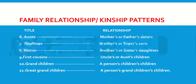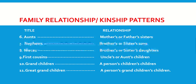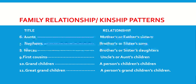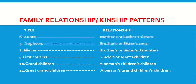Aunts are your mother's or father's sisters. Nephews are your brothers' or sisters' sons. Nieces are your brothers' or sisters' daughters. First cousins are your uncles' or aunts' children. Grandchildren is a person's children's children. Great grandchildren is a person's grandchildren's children.